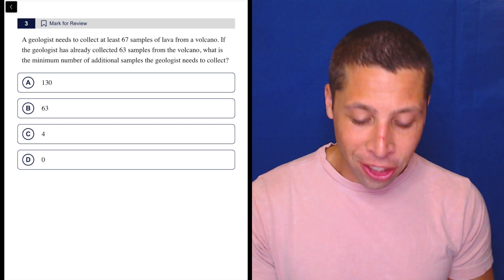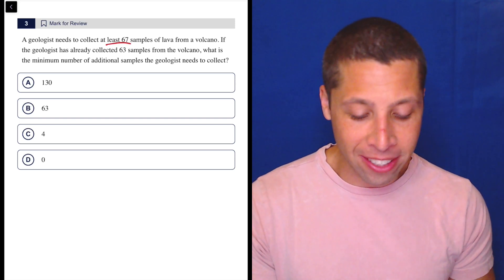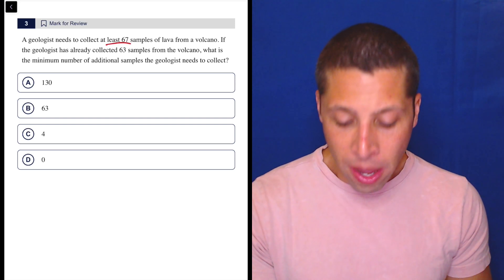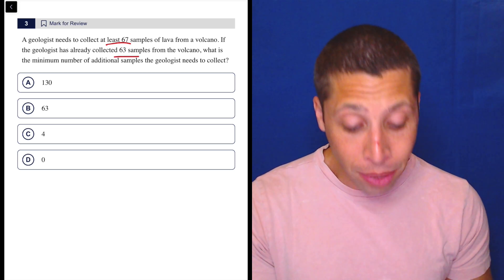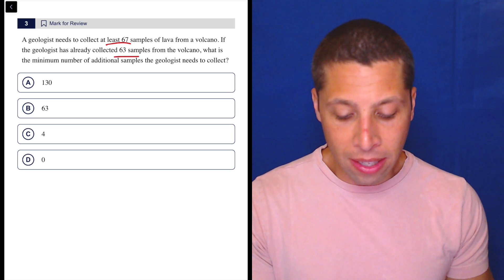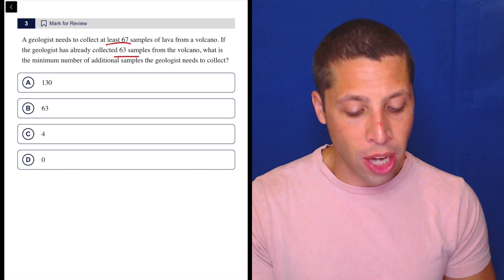I mean, there's a little bit of a story here, but a geologist needs to collect at least 67 samples of lava from a volcano. If the geologist has already collected 63 samples from the volcano, what is the minimum number of additional samples the geologist needs to collect?